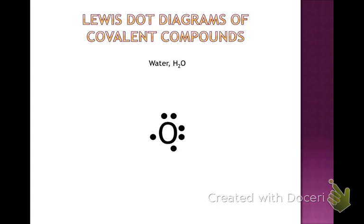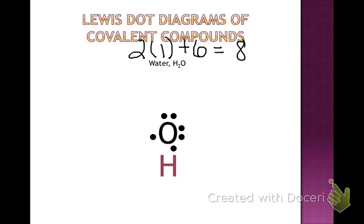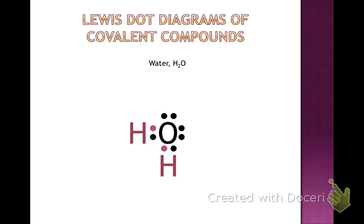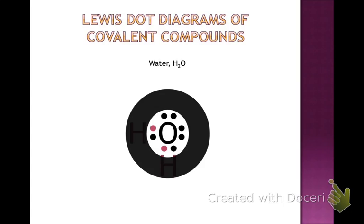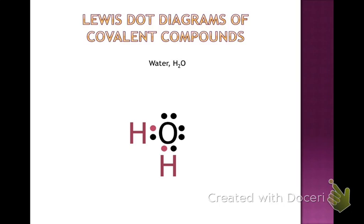Next we have water. Count the electrons: 2 hydrogens each with 1 valence electron gives 2 times 1, plus oxygen with 6 electrons, for a total of 8 electrons or 8 dots. Draw the oxygen, fill in the hydrogens, and count them up — make sure there are 8 dots and that oxygen fulfills the octet rule. Covering hydrogen, oxygen should have 8 electrons — it does fulfill the octet rule. Label the lone pairs and bonded pairs: water has 2 lone pairs and 2 bonded pairs of electrons.